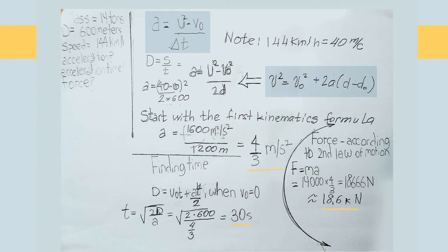Now we have to find the force. And according to Newton's second law of motion, force equals mass times acceleration. So, it is equal to 14,000 times 4/3 equals 18,666 Newtons.